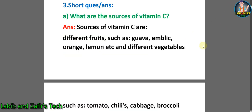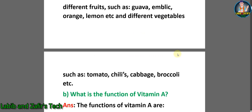Now let's go through some short question answers. A: What are the sources of vitamin C? Answer: Sources of vitamin C are different fruits such as guava, amla, orange, lemon, etc., and vegetables such as tomato, chilies, cabbage, broccoli, etc.